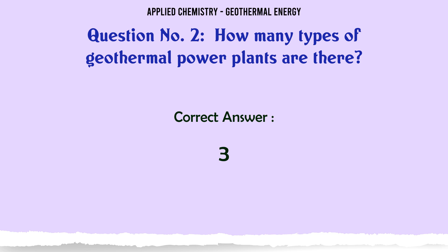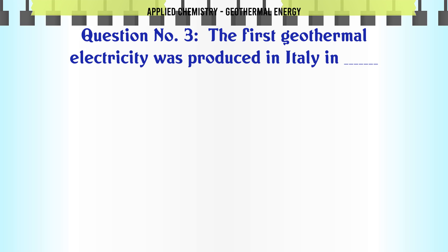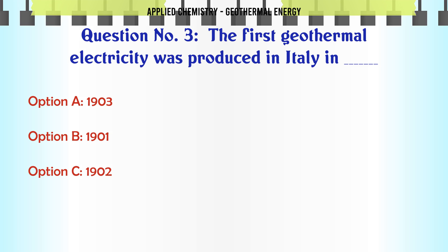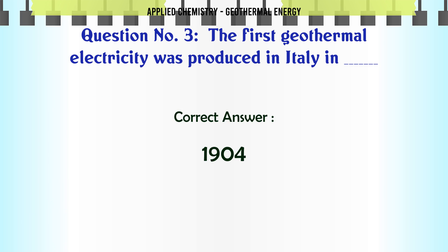The first geothermal electricity was produced in Italy in: A: 1903, B: 1901, C: 1902, D: 1904. The correct answer is 1904.